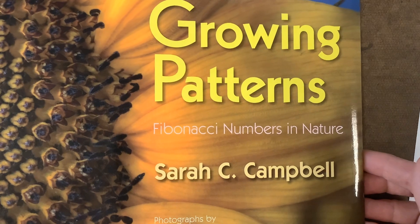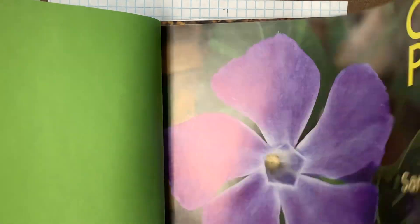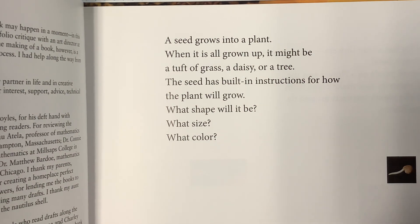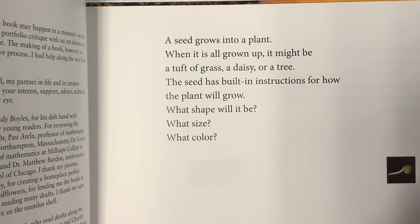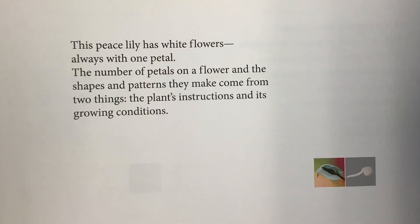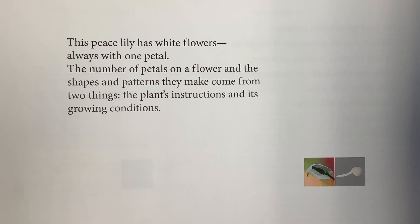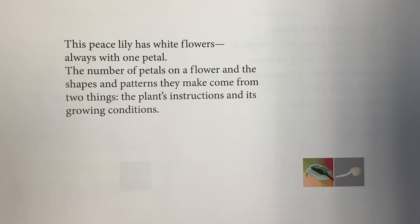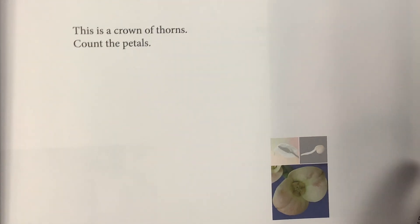Now we're going to look at this fun little picture book called Growing Patterns: Fibonacci Numbers in Nature. I want to show you all the different places that these Fibonacci numbers really are. A seed grows into a plant - it might be a tuft of grass, a daisy, or a tree. The seed has built-in instructions for how the plant will grow. This peace lily has white flowers, always with one petal. The number of petals on a flower and the shapes and patterns they make come from two things: the plant's instructions and its growing conditions. This is a crown of thorns - count the petals: two.